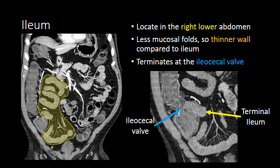The ileum is located in the right lower abdomen and has a thinner wall than the jejunum due to decreased fold density. The ileum is the most common segment of bowel affected by pathology, and specifically the terminal ileum is commonly involved. The terminal ileum joins with the cecum at the ileocecal valve, which can often be identified as a small fatty structure, sometimes shaped like an olive.